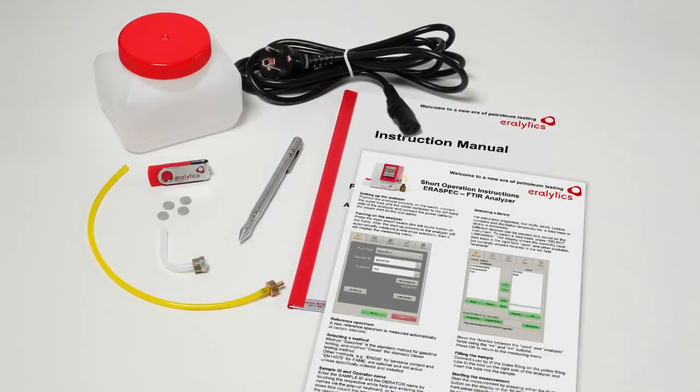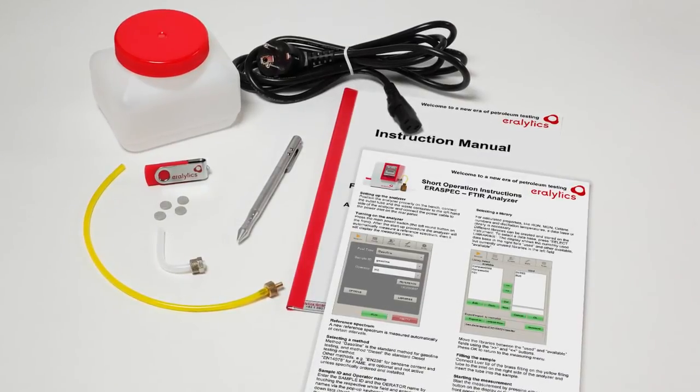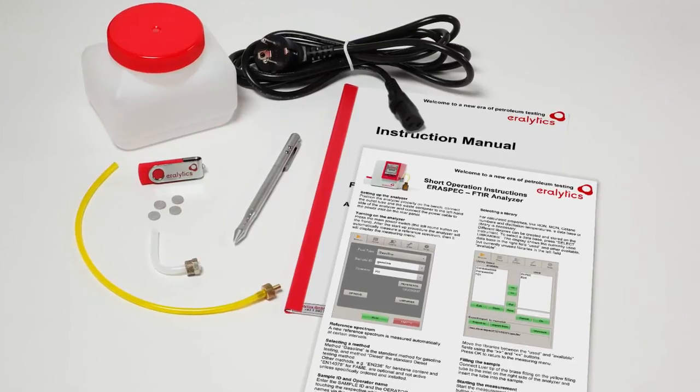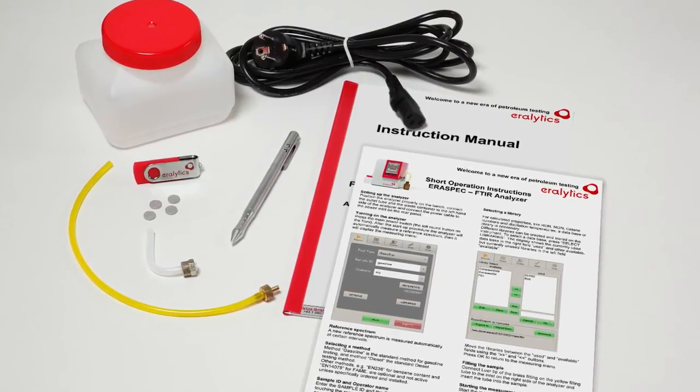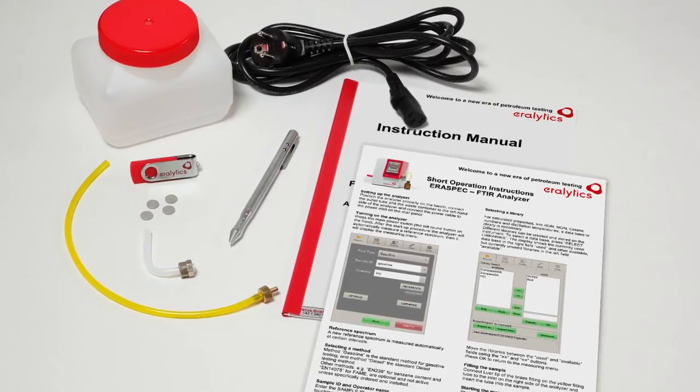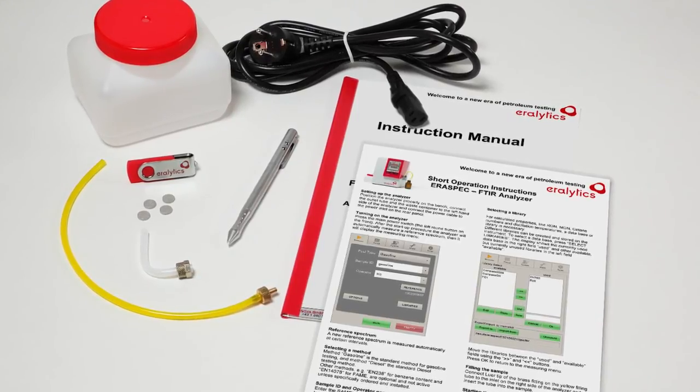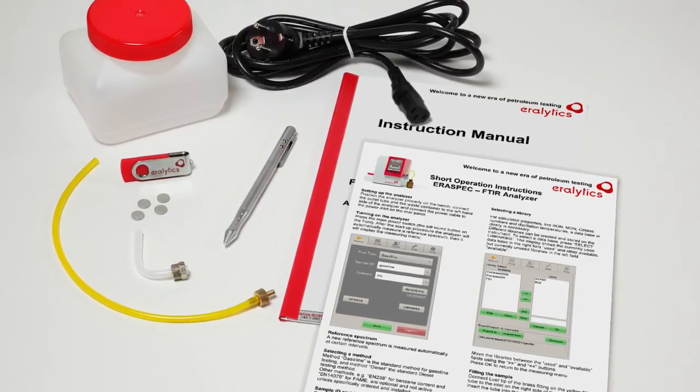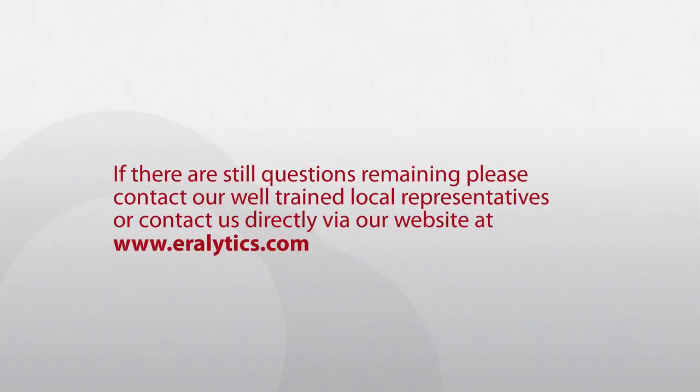Please make sure to carefully read the instruction manual before you start with the first measurements. The manual is available as PDF file on the delivered USB flash drive. Additionally, you will find a one-page laminated short instruction inside the Accessories box. If there are still questions remaining, please contact our well-trained local representatives or contact us directly via our website at aerolytics.com.